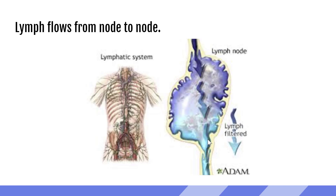So what do the lymph nodes do? Lymph, also called lymphatic fluid, is a collection of extra fluid that drains from cells and tissues — fluid that's not reabsorbed in the capillaries, plus other substances. Those other substances include things like proteins, minerals, fats, nutrients, damaged cells, cancer cells, and foreign invaders like bacteria and viruses. Lymph also transports infection-fighting white blood cells, or lymphocytes.